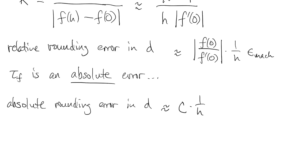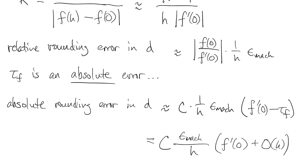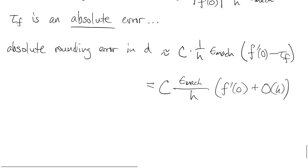So we can multiply the expression we have by d, which we already know is f zero prime minus the truncation error, which is f zero prime plus something times h. And when we multiply it out, the first term is a constant times machine epsilon over h. The rest of the terms are smaller.